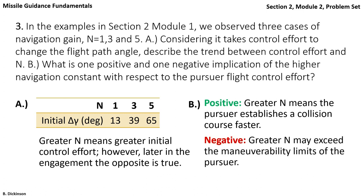A negative thing about increasing N is that early on, we know that we are always increasing the effort of the pursuer. Meaning that we might reach some maneuverability limit.